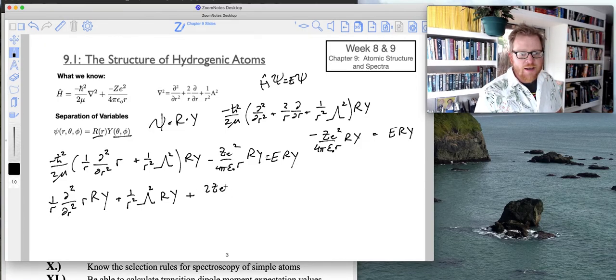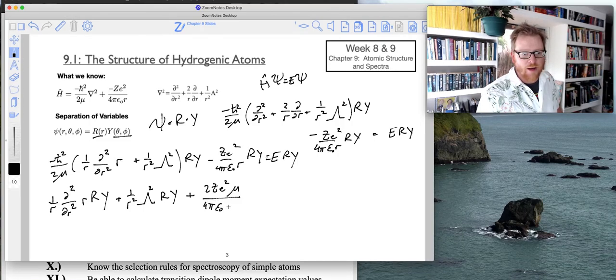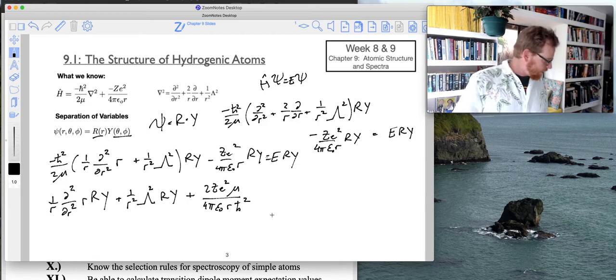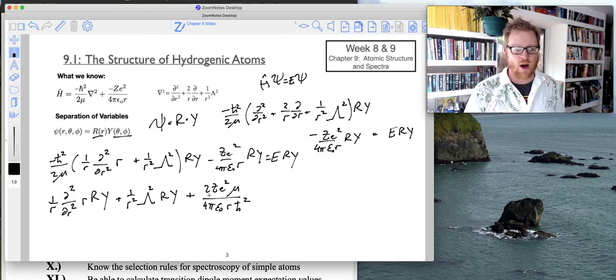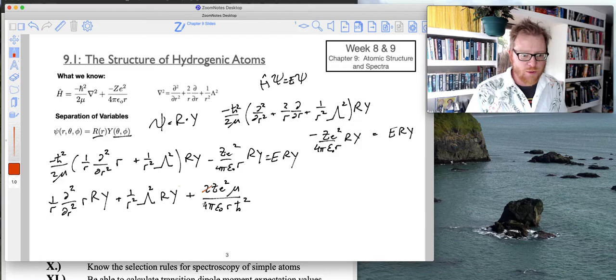So and then I've got 2 z e squared times mu, because right, I'm distributing through those constants, over 4 pi epsilon r h bar squared. And now I'm going to take care of this 2 and 4 right here. I wanted to write those out just so you see where they come from. But let's just simplify those. So now that's just becoming a 2. Great.